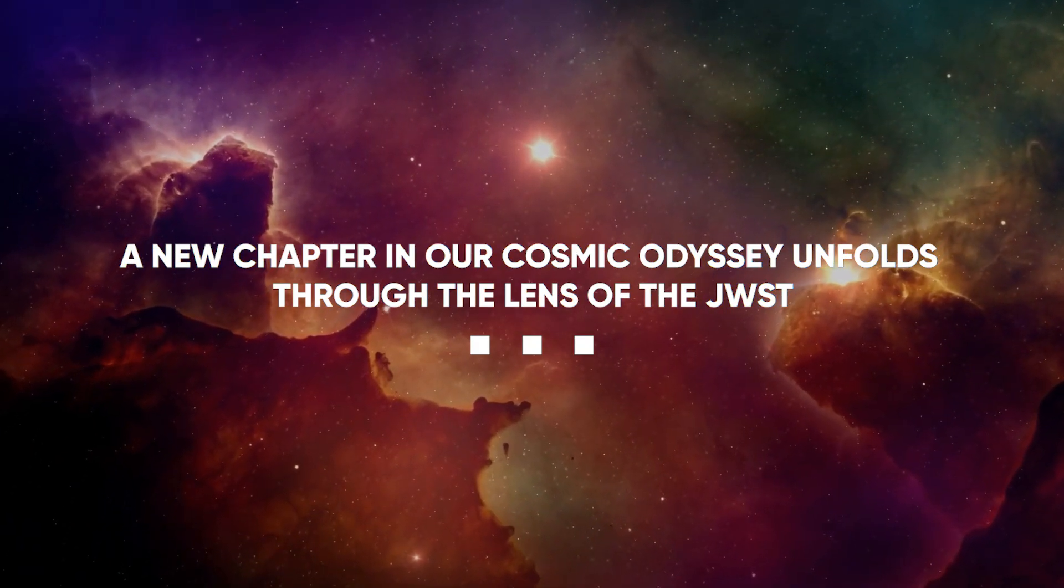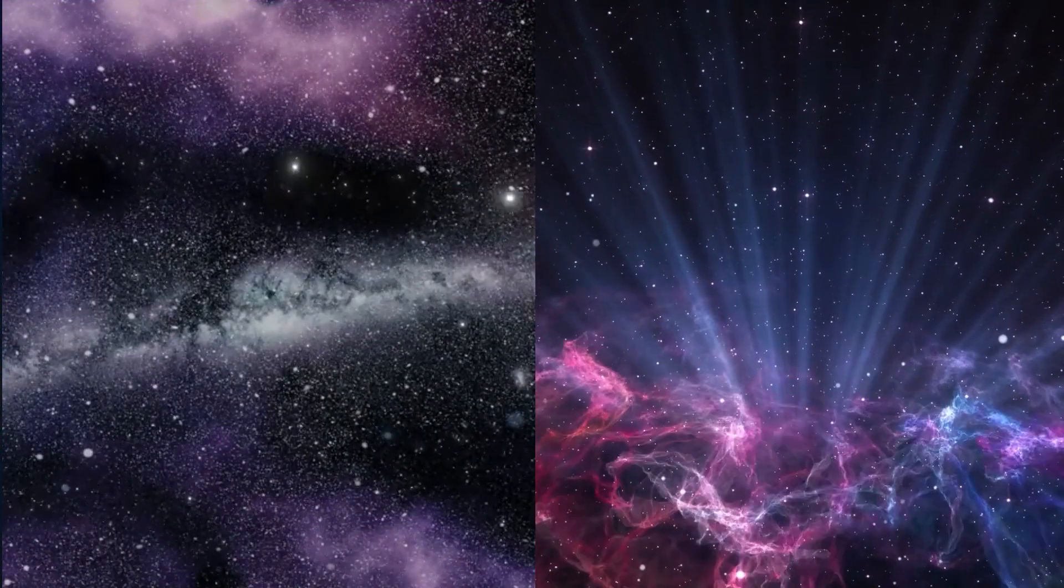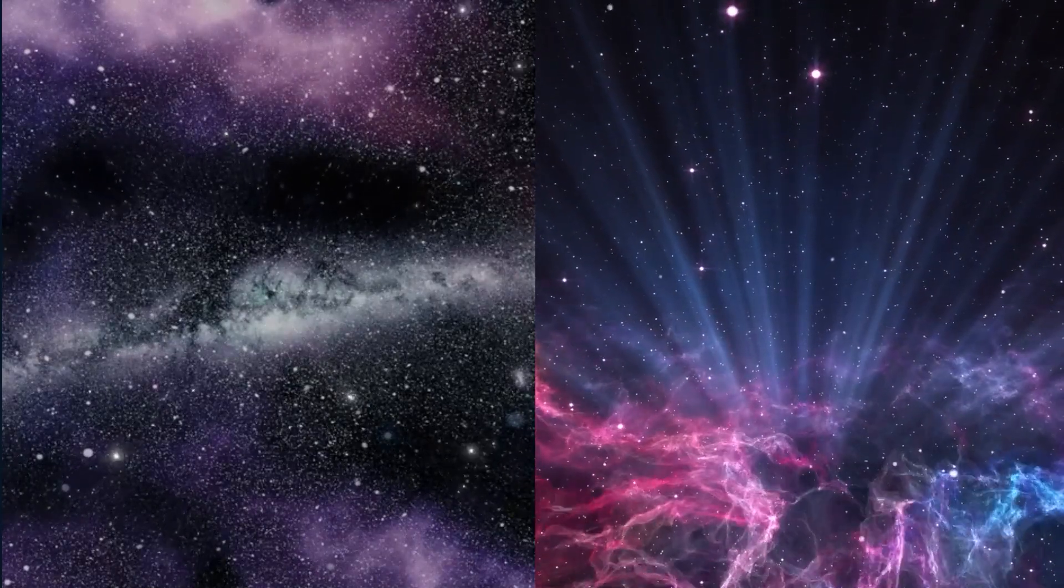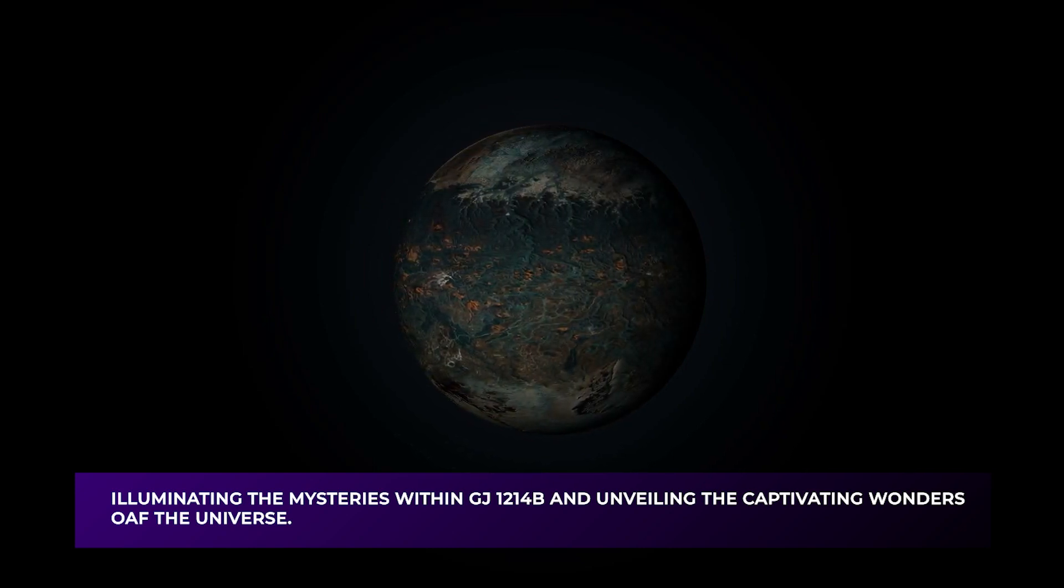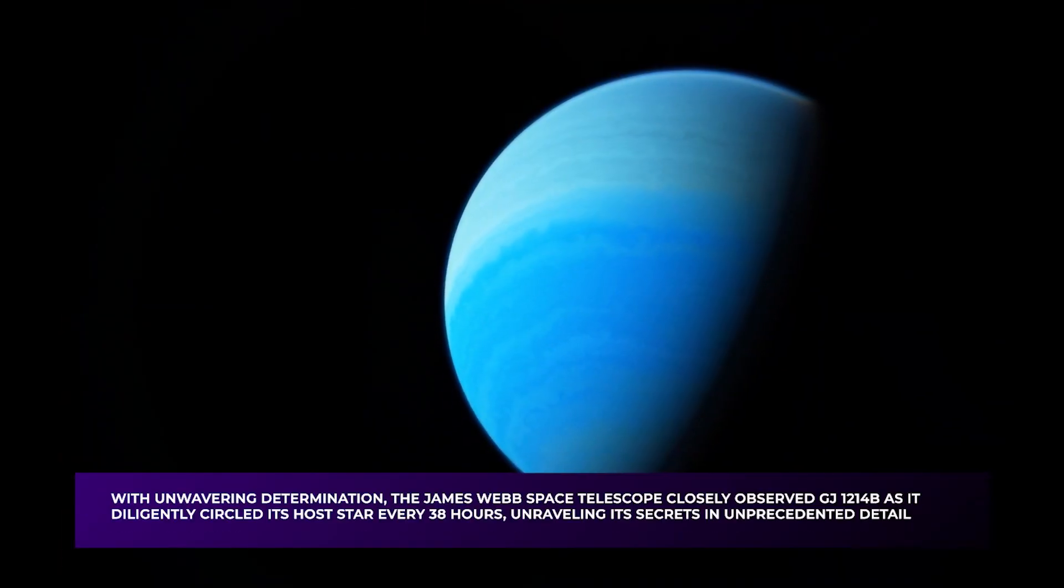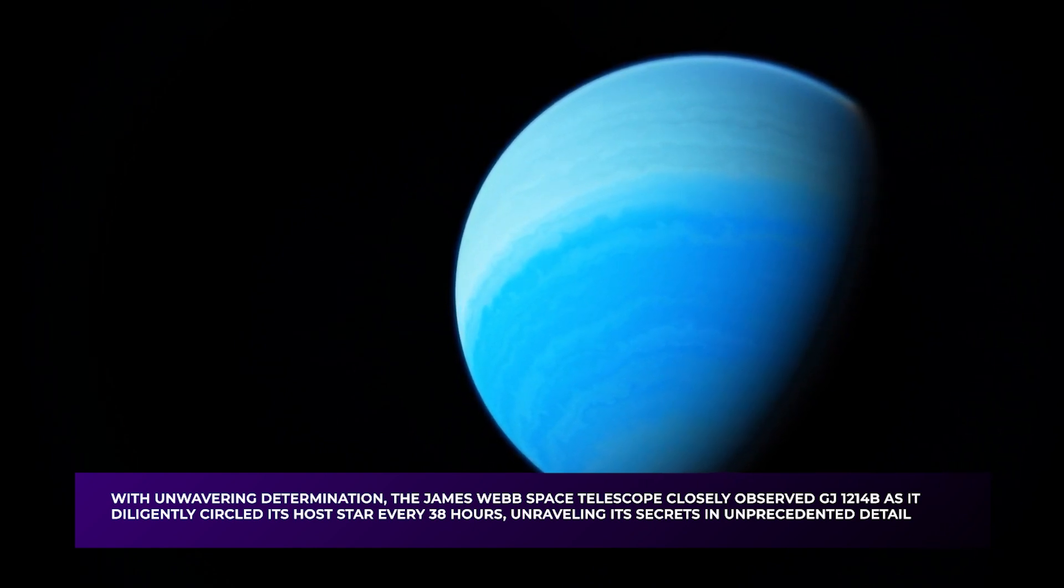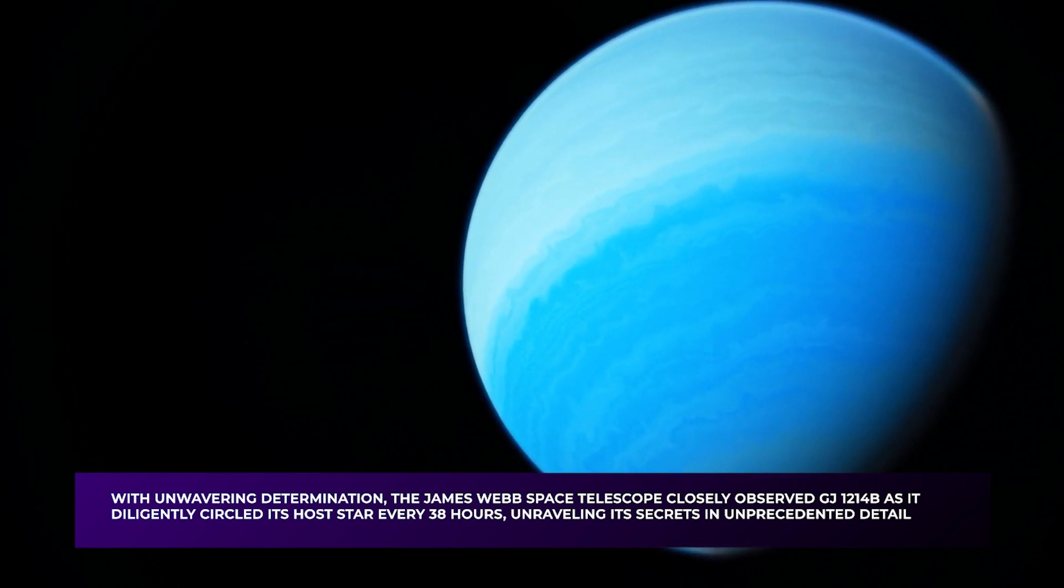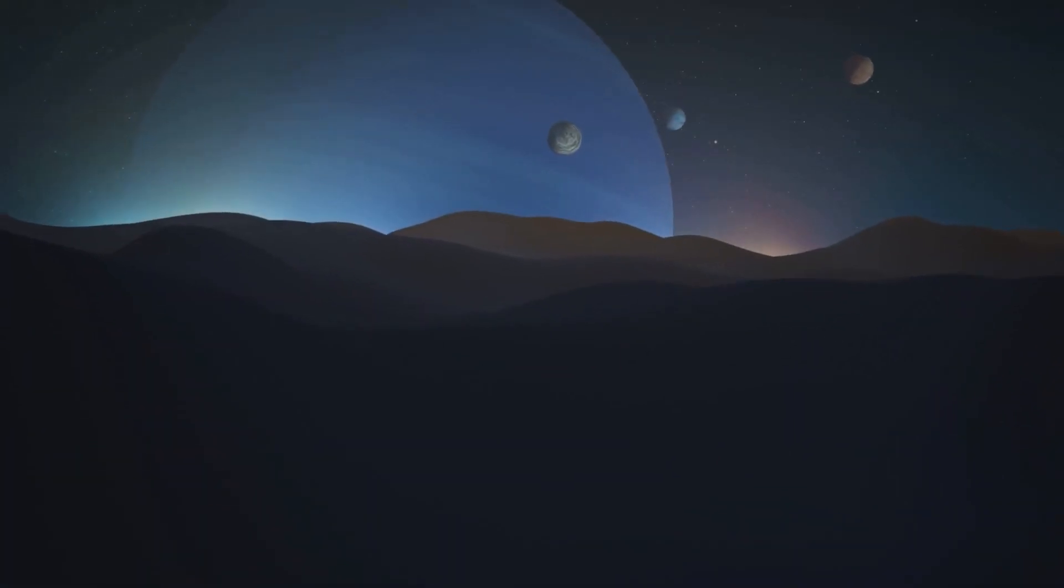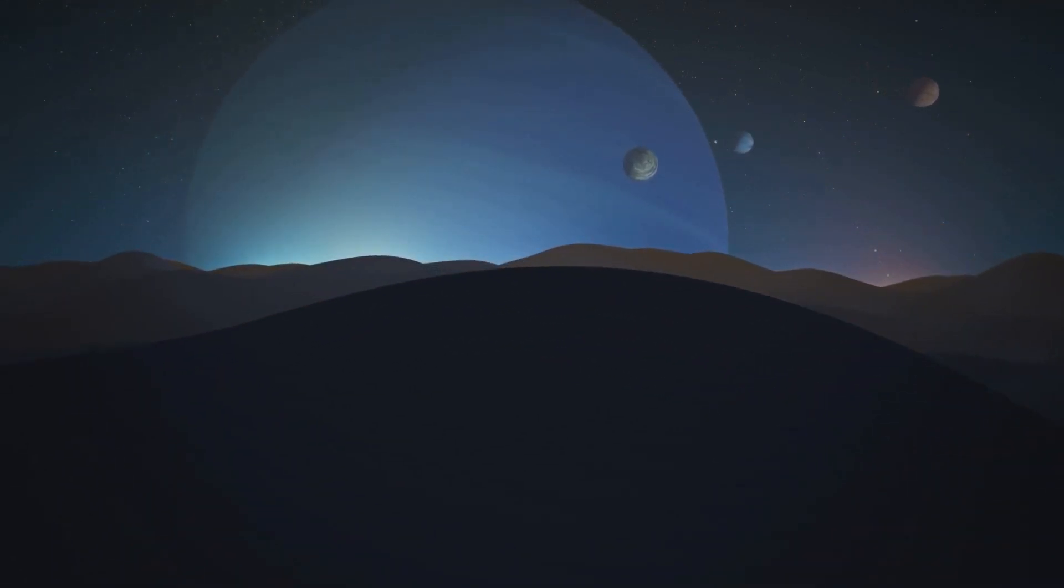A new chapter in our cosmic odyssey unfolds through the lens of the JWST. Armed with cutting-edge technology and an unwavering spirit of exploration, we are poised to venture into uncharted territories, illuminating the mysteries within GJ-1214b and unveiling the captivating wonders of the universe. With unwavering determination, the James Webb Space Telescope closely observed GJ-1214b as it diligently circled its host star every 38 hours, unraveling its secrets in unprecedented detail. Eliza Kempton excitedly shares the remarkable findings, explaining how they effectively mapped the planet's temperature across its various phases.